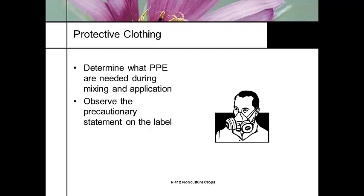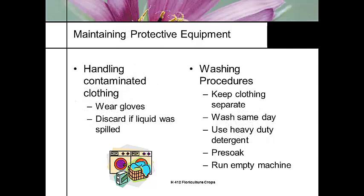All of this is on the label, which you must have. Observe the precautionary statement on the label. Also, handling contaminated clothing is just as dangerous. Most pesticide applicators don't take their clothes home and put them in the family laundry. You need to keep it separate, wash the same day, use a heavy-duty detergent, do a pre-soak, and if you've run contaminated clothing through the washing machine, run it again clean. At my home we use a combination of bleach, vinegar, and borax for contaminated clothing.